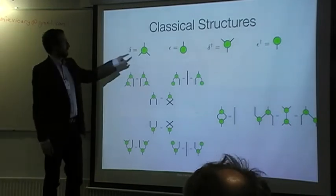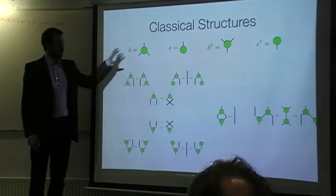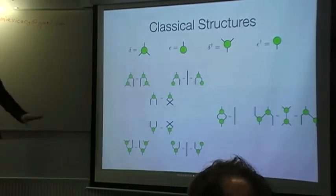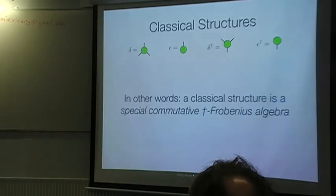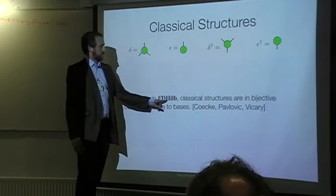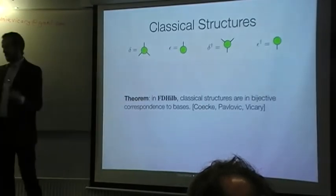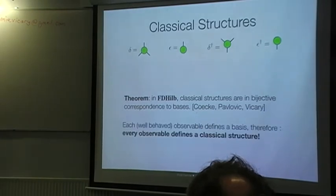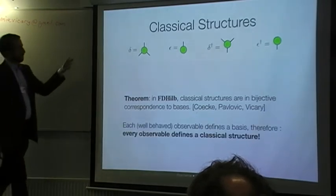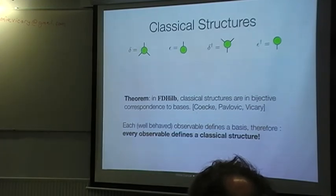So, the idea is you have a copying operation and a deleting operation. Here are the adjoints. And they obey all these equations. And that is the definition of the special commutative dagger-Frobenius algebra. This would not be really interesting without this theorem. Which says that, in finite-dimensional Hilbert spaces, these things correspond bijectively to bases. And therefore, every such algebra defines an observable.